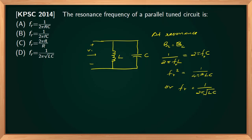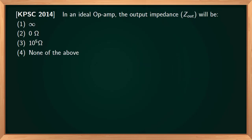An ideal op-amp, the output impedance Zout will be. For an ideal op-amp, output impedance, the impedance across the output terminal Zout, is taken as zero.